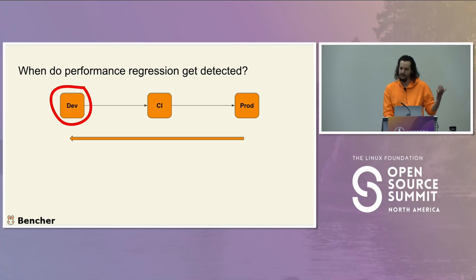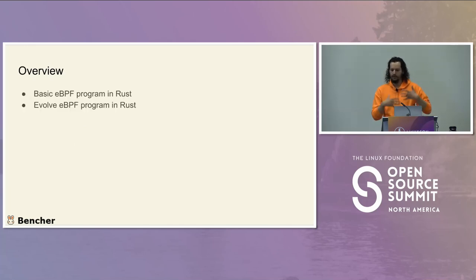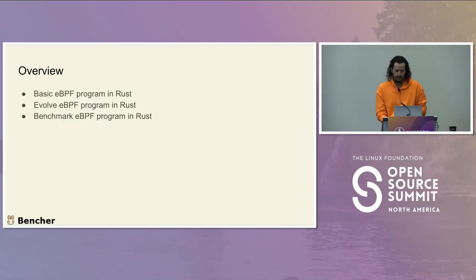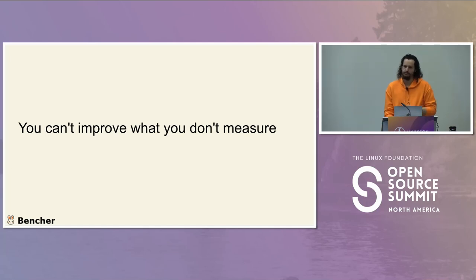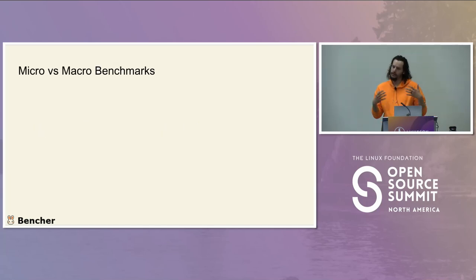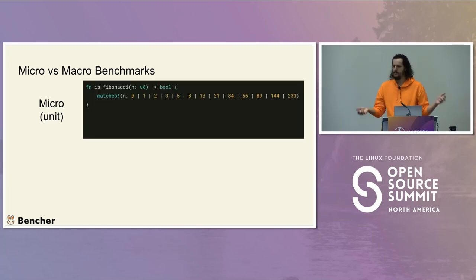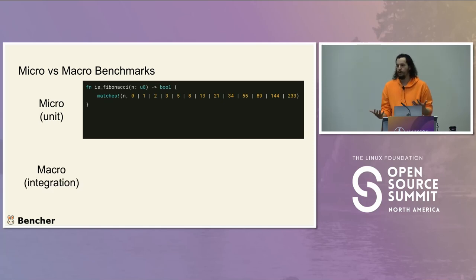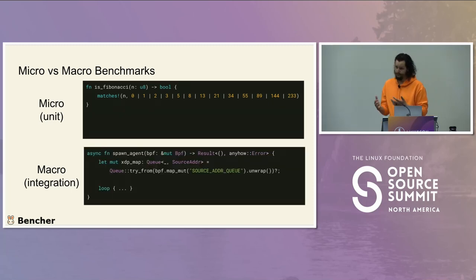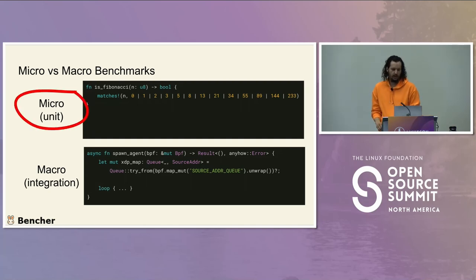We're going to look at doing this in development. We've looked at a basic eBPF program and evolving it; now we'll look at benchmarking it. You can't improve what you can't measure. With benchmarks, there are both micro and macro benchmarks. Micro benchmarks I think of like unit tests — for example, the Fibonacci function we had to fix. Macro benchmarks are more like integration tests — at the level of the spawn agent helper function.